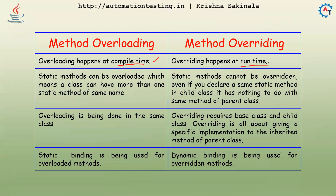Static methods can be overloaded, which means a class can have more than one static method of the same name. The rules still apply — the argument should be different, the data type should be different, or the order should be different. Static methods can be overloaded, meaning a class can have more than one static method of the same name.